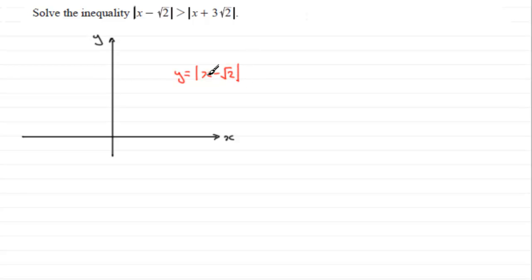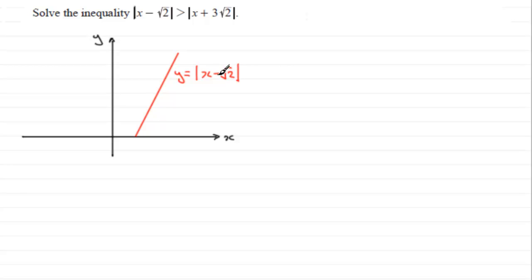Without the mod sign this would be a linear function — a straight line graph — with gradient 1 and y-intercept at minus root 2. So we would have a line coming down, intersecting the x-axis at root 2 (where y equals zero). But because we've got a mod sign, instead of carrying on downward, it's going to be reflected upwards.